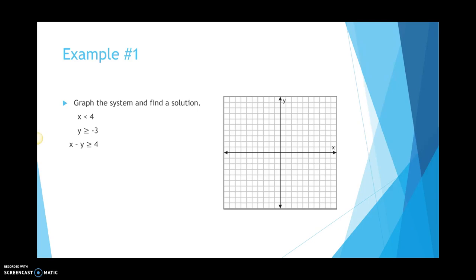Example number one: graph the systems to find the solution. We have x is less than 4, y is greater than or equal to negative 3, and x minus y is greater than or equal to 4. Remember, if you have the less than or greater than sign, it is a dashed line when graphing. If you have greater than or equal to or less than or equal to, that's a solid line. Also, if you have both x and y, the equation needs to be put into y equals mx plus b form.